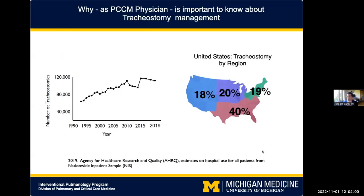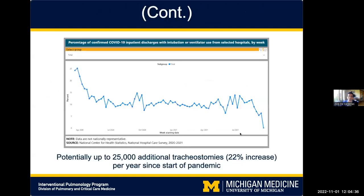As pulmonary and critical care providers, although the majority of us don't place tracheostomies, it's important to know about them because just in the last two decades, the number of tracheostomies — especially in the ICU — has increased exponentially, almost reaching above 100,000 in the last year. Here in Michigan, around 20% of our ICU patients will at some point require a tracheostomy. During the COVID pandemic, there was an additional 25,000 tracheostomies per year, and this trend is here to stay.